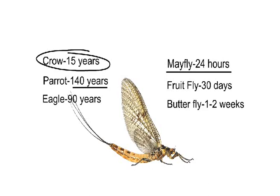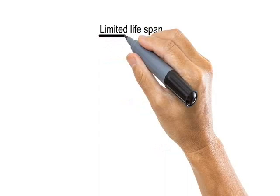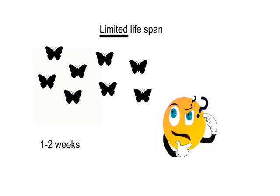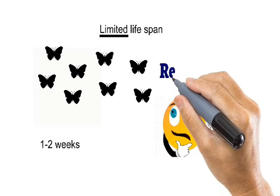But if the lifespan of organisms is limited — for example, that of a butterfly is only 1 to 2 weeks — all butterflies would vanish within a few months. Yet we are still able to see new butterflies. So from where do these new butterflies come into existence? How does life continue? The answer is the process of reproduction.